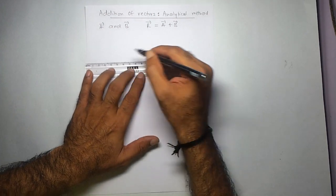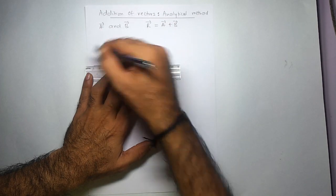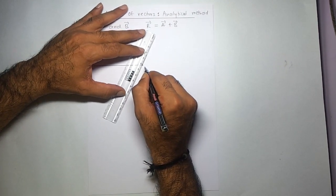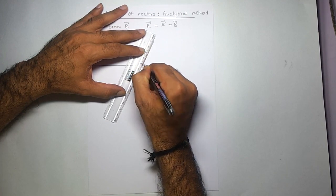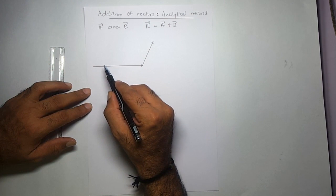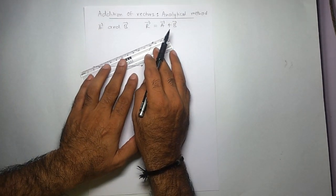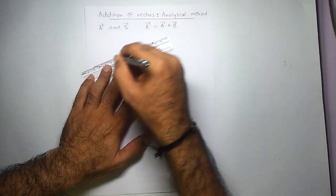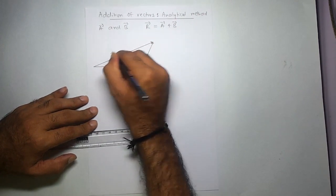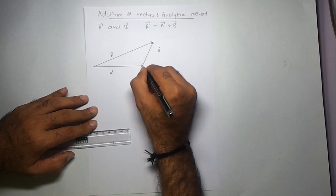Let me first draw vector A — let's say this is vector A. And let's say this is vector B; I'm taking any random direction and random magnitude. I want to add these two vectors. By the graphical method we know that if I complete this triangle I'll get the resultant. So if I join these two points I get the resultant of vector A and vector B — this is vector R.